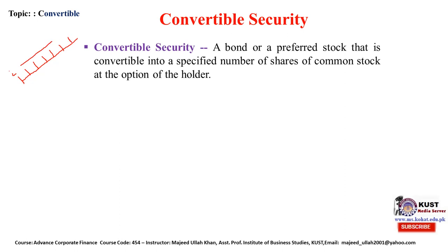After a certain period, the holder has the option to convert the security into common stock. This option of conversion makes it a convertible security; otherwise, without this option, the securities would be straight bonds or straight preferred stock. The holder receives interest each year just like a common bond, or dividends just like preferred shares, but after a certain period specified in the contract, the securities are converted into common stock.